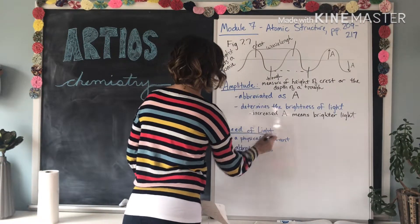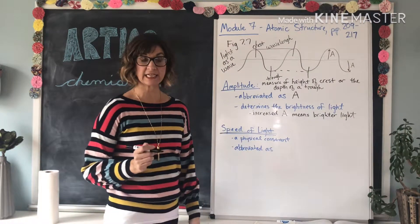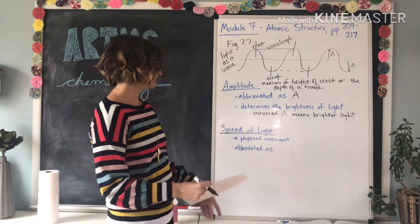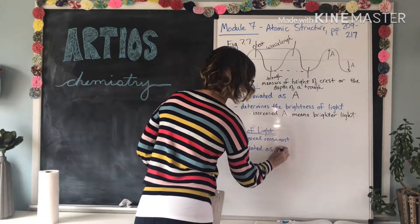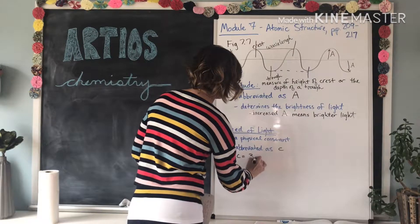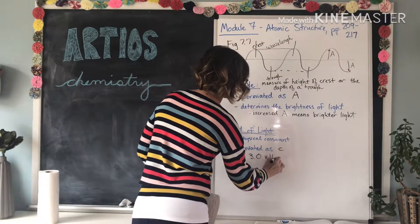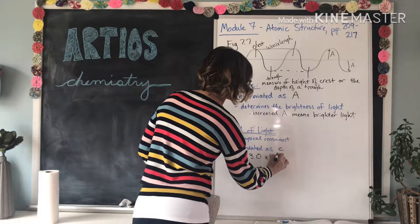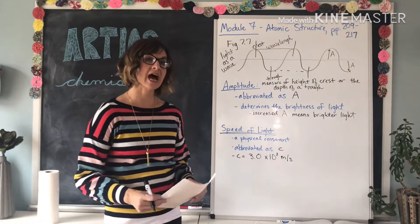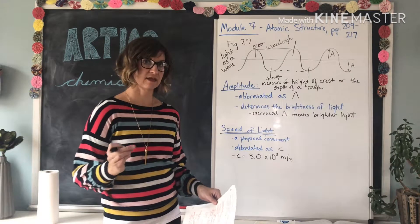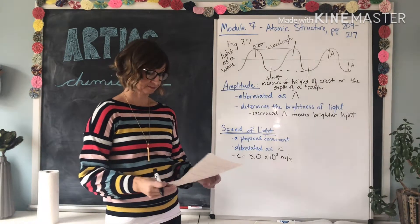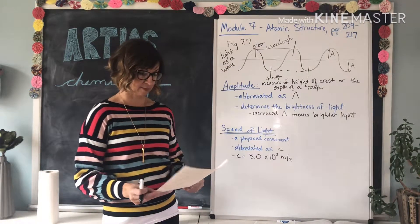Next is the speed of light. The speed of light is a constant — meaning it never changes. It is a physical constant abbreviated as lowercase c, and it equals 3.0 times 10 to the eighth power meters per second. You don't have to memorize this number; it will be given to you on the test.